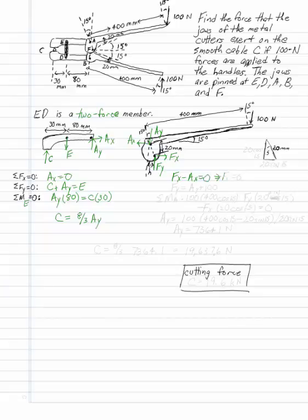Well, A, X is already zero. So now I know that F, X equals zero. F, Y is A, Y plus 100. And I can take the sum of the forces.